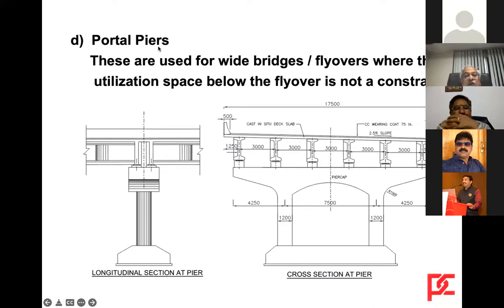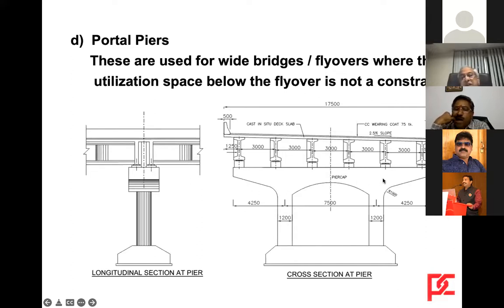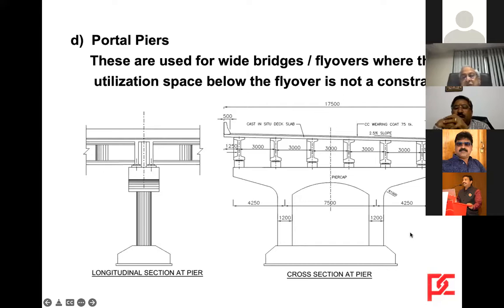Portal piers are used for wide bridges and flyovers where the utilization of space below the flyover is not constrained. Where space for at-grade traffic is a constraint, we go for a single pier with a large pier cap. Portal piers are actually more economical and very good for seismic load transmission.